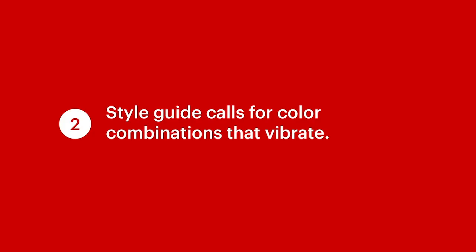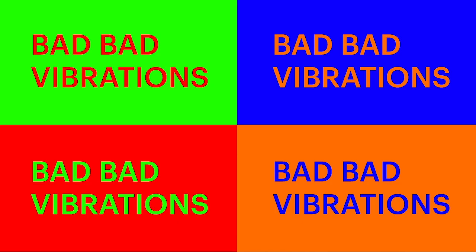Example two: the style guide calls for color combinations that vibrate. Color vibration, or chromostereopsis, occurs with colors that fall opposite one another on the color wheel — the two colors are just competing, which causes a visual vibration. Some examples include blue and red, red and green, and blue and orange. You should avoid color vibration because it can cause cognitive overload and be dizzying, which is a really negative experience for all users.